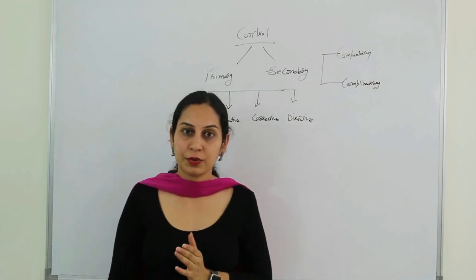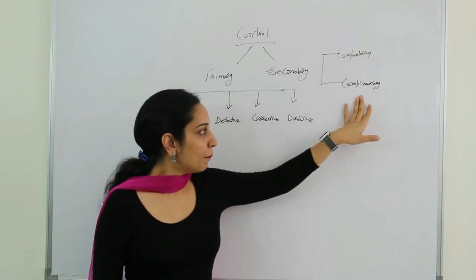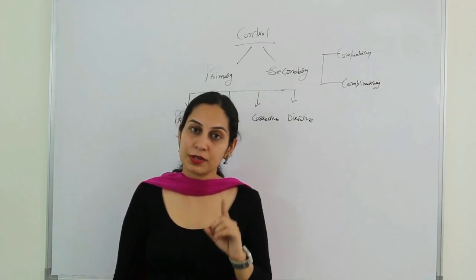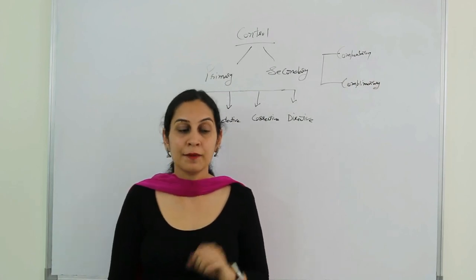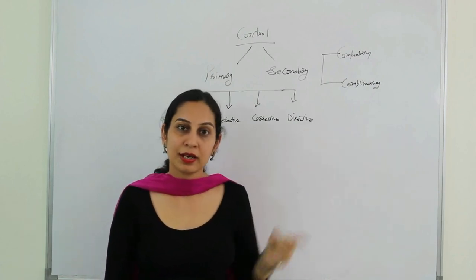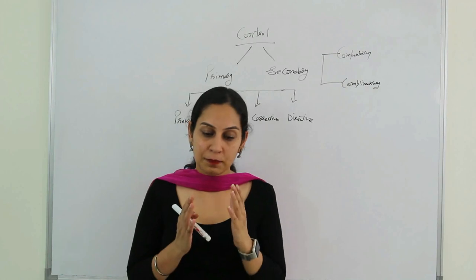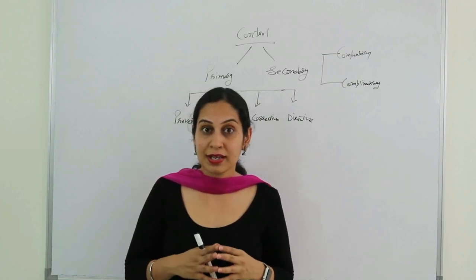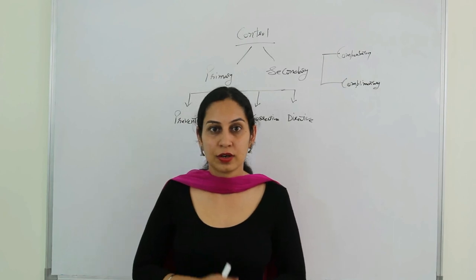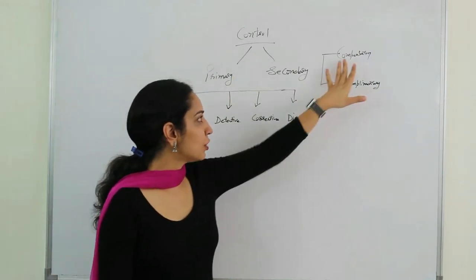Compensatory control compensates for the missing primary control, such as when there is no segregation of duty. Complementary controls, on the other hand, support the primary control without being a substitute for it. For example, having a third-party outsider periodically review bank reconciliation simply complements the existing primary control, making sure controls are in place and working effectively and efficiently.